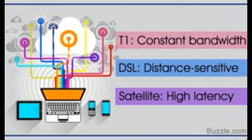What is the difference between T1 and DSL technologies? How is DSL different from satellite internet connection? T1, DSL, and satellite are technologies primarily used for internet access. People often confuse T1 with DSL, and that's probably because T1 is also known as Digital Signal 1, DS1. In this Buzzle article, we tell you about these three technologies and the differences between them.